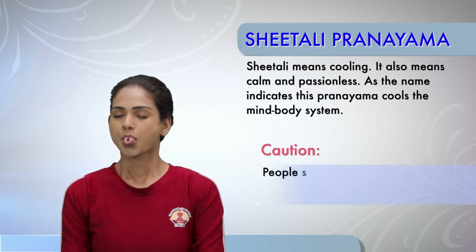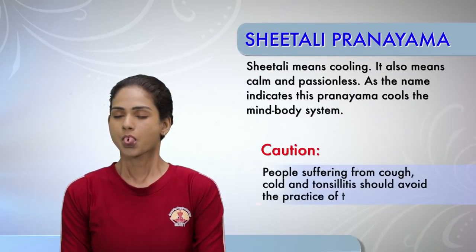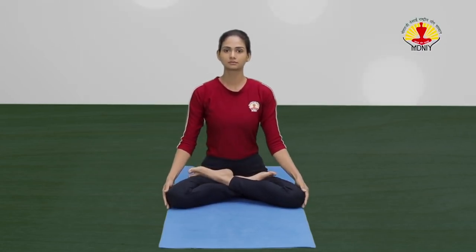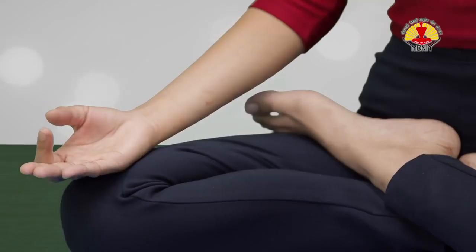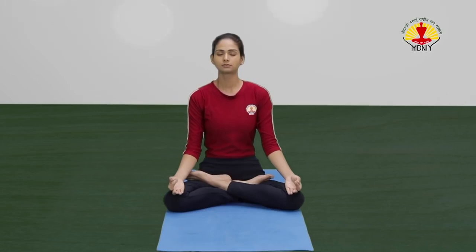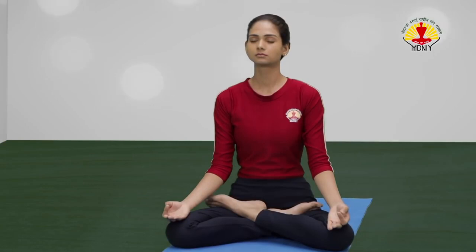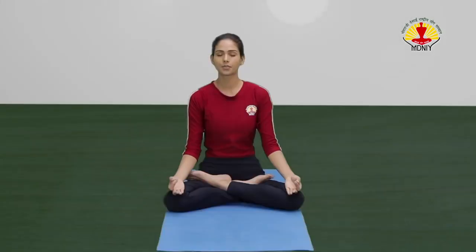Shitali Pranayam. Caution! People suffering from cough, cold and tonsillitis should avoid the practice of this Pranayam. Sit in any comfortable posture. Place the hands on the knees in Jnana Mudra. Close your eyes. Now roll up the tongue and shape it as a tube. Inhale maximum through the tongue. Take the tongue inside the mouth and close the mouth, then slowly exhale through the nostrils, remaining aware of the area used for smelling. This is one round of Shitali Pranayam. Repeat it for four rounds.